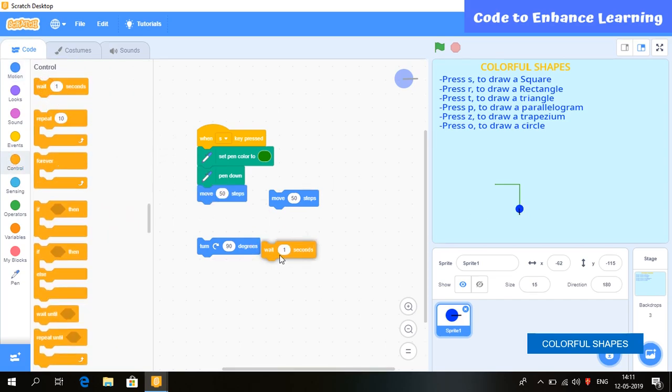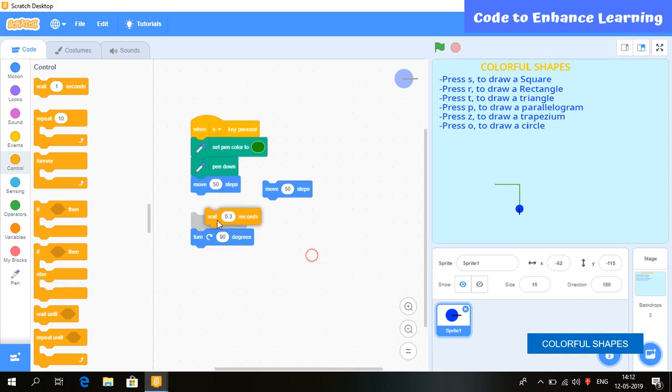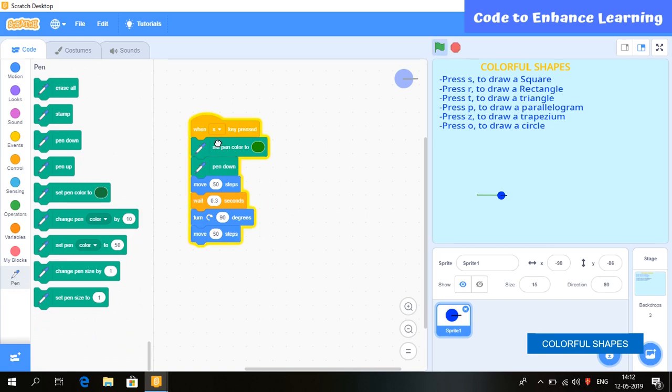Now, select this block so that we can have a pause after each line drawn. Let's arrange every block so that we can see how it works. You can see here the pause after each line. Now, we have to repeat these steps to make a complete square.